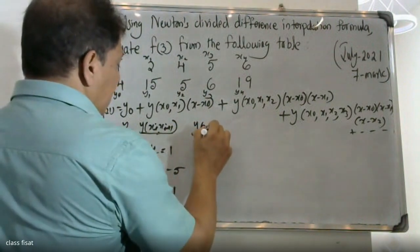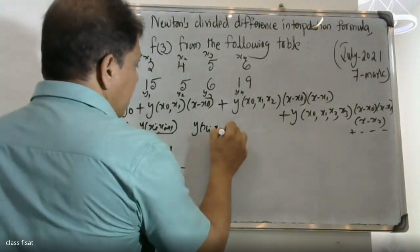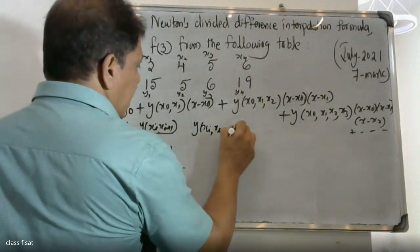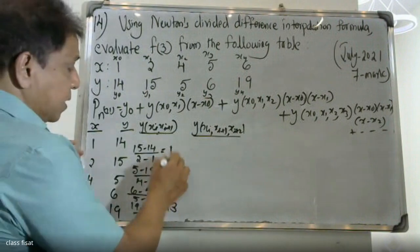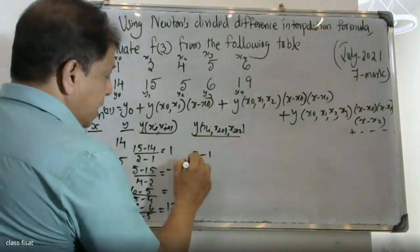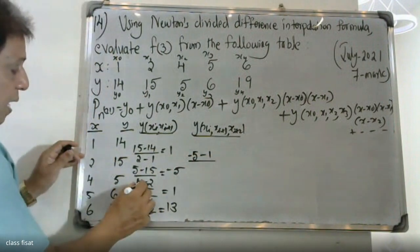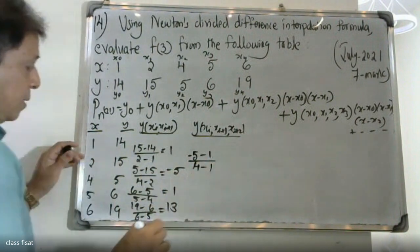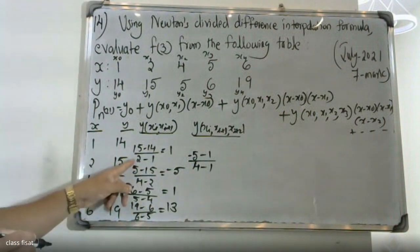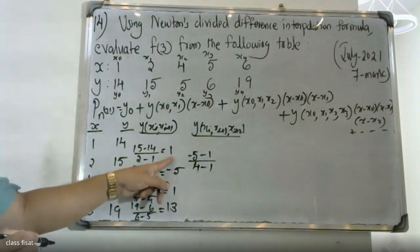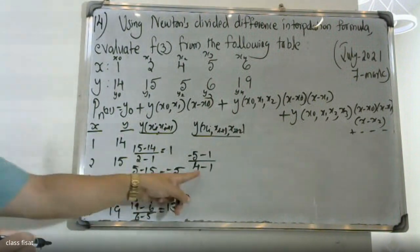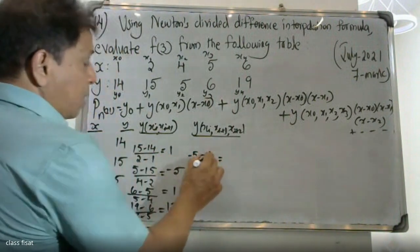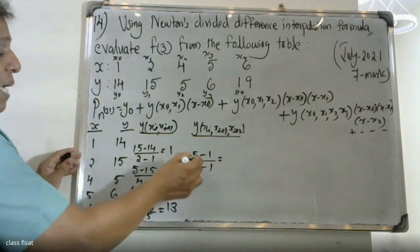The divided difference y(xi, xi+1, xi+2): y(xa, xi+1) divided by y(xa, xi+2), then y(xa, xi+1) and xi+2. Then y(xa, xi+1, xa, xi+1, xa, xi+3) — these represent successive divided difference entries in the table.